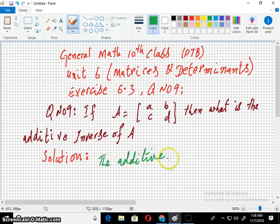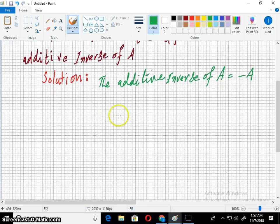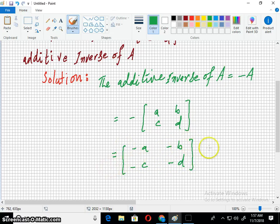The additive inverse of A is minus A. Just changing the signs of the entries will produce the additive inverse of the matrix A. So, this is the answer.